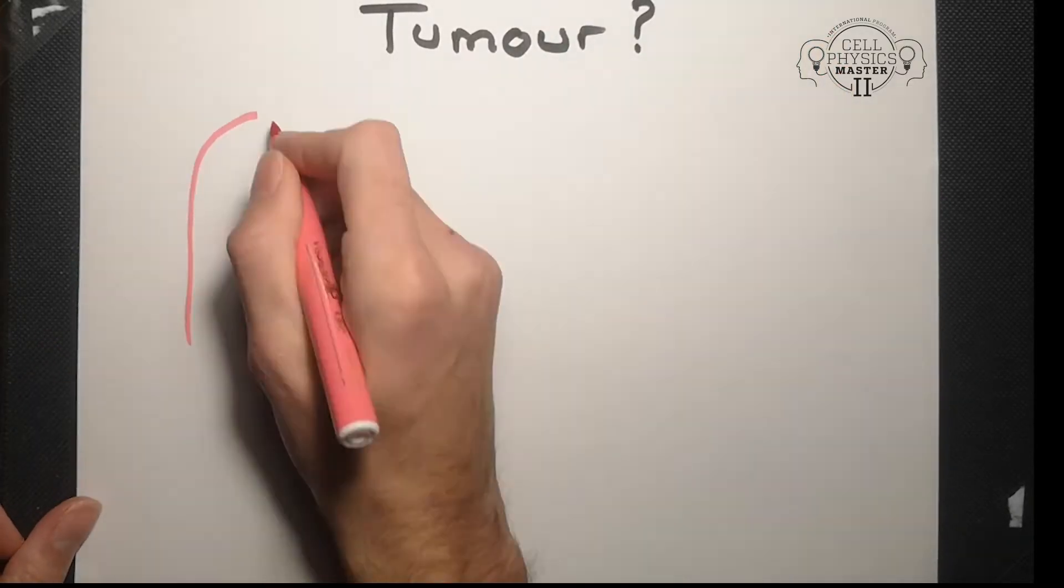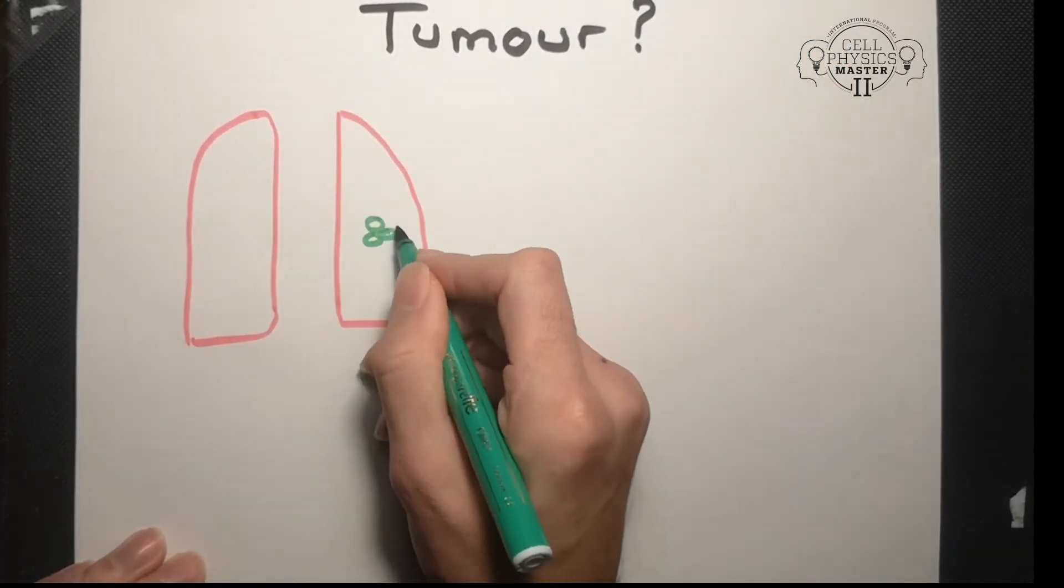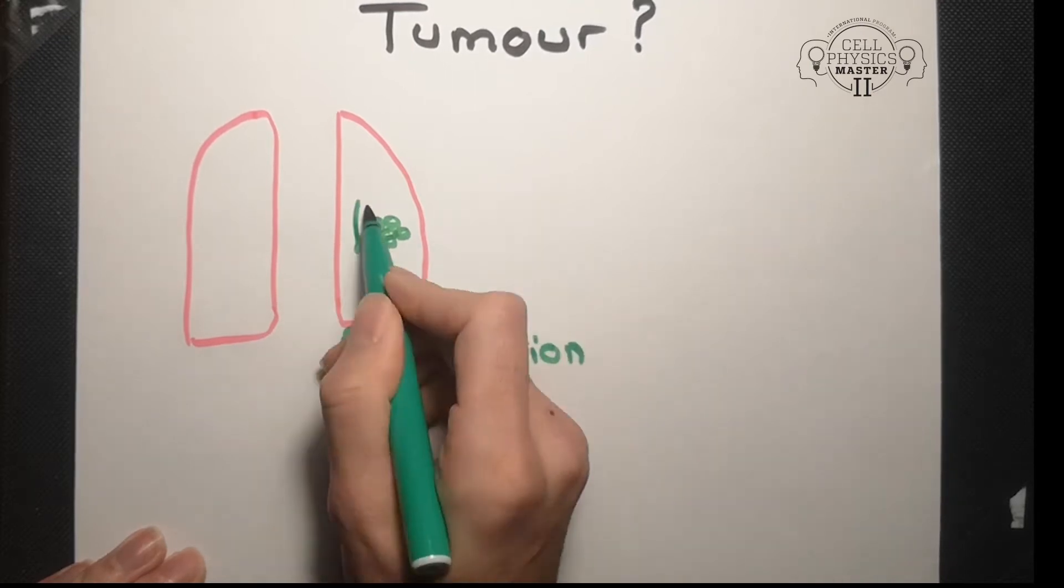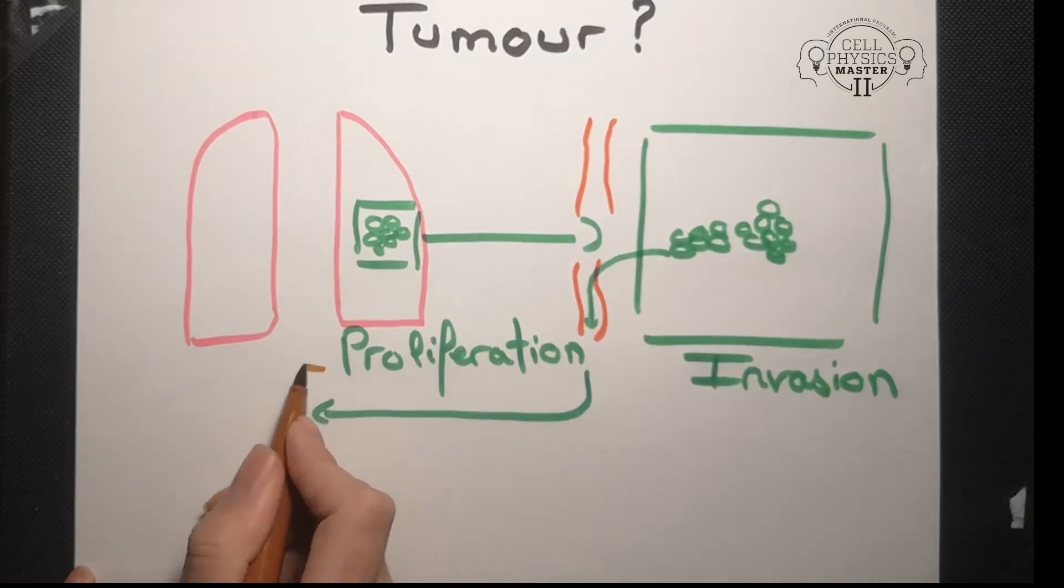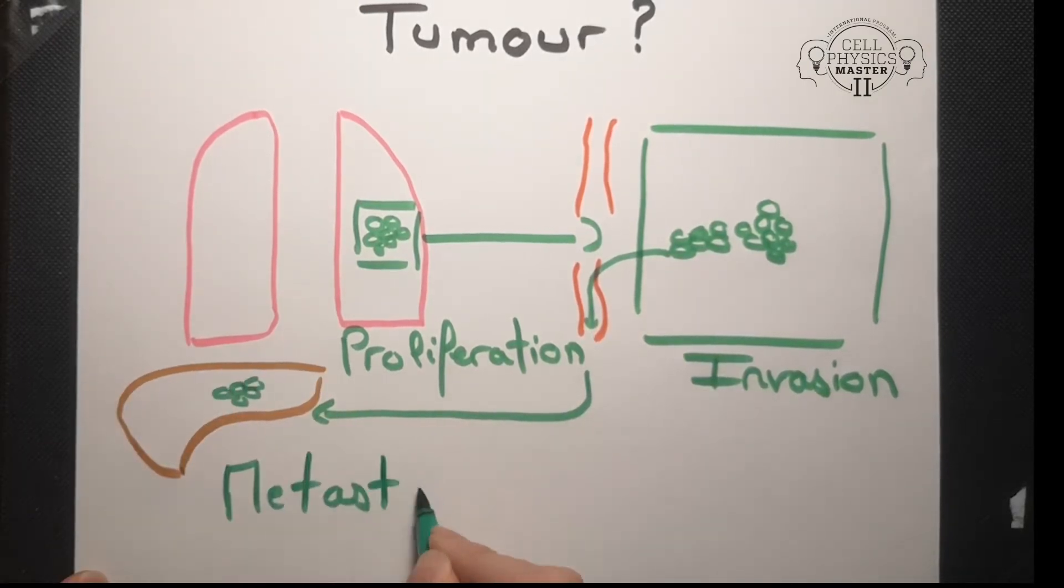What is a tumor? It's a group of cells undergoing uncontrolled proliferation. The cells invade their surrounding tissues and finally spread throughout the body to form metastasis.